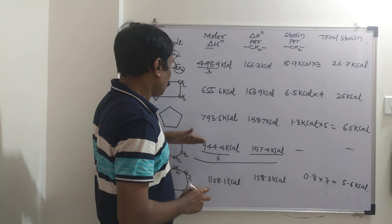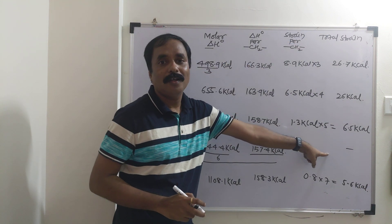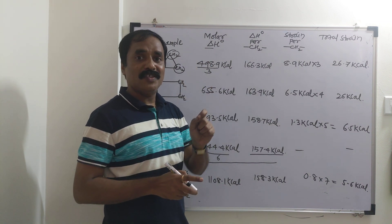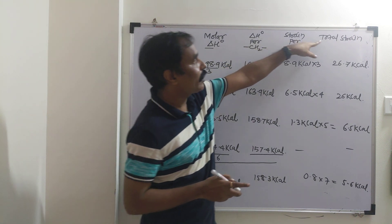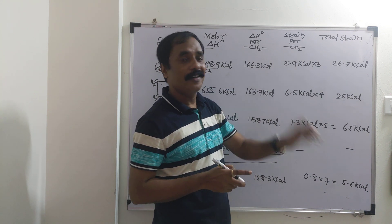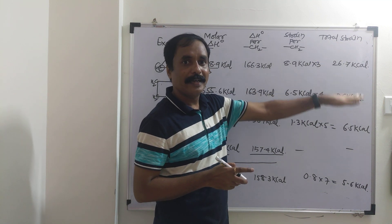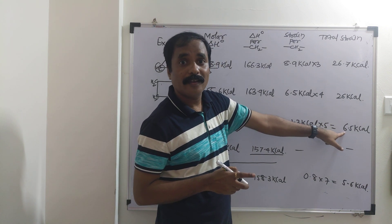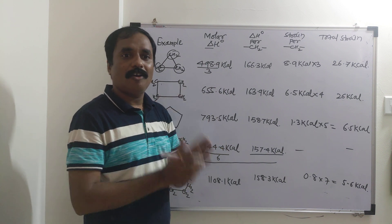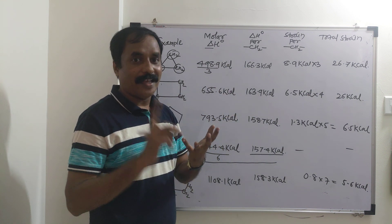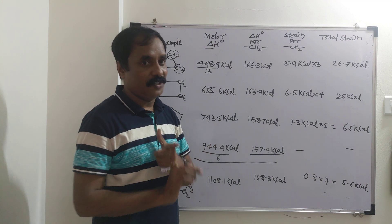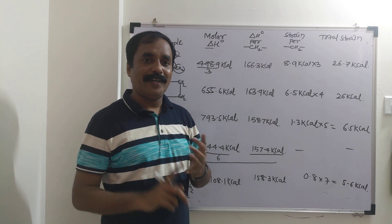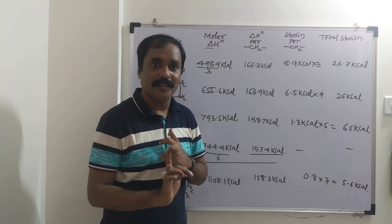For cyclobutane, strain per CH₂ is 163.9 minus 157.4 equals 6.5 kilocalories, giving total strain of 6.5 times 4 equals 26 kilocalories. For cyclopentane, strain per CH₂ is 158.7 minus 157.4 equals 1.3 kilocalories, total strain 1.3 times 5 equals 6.5 kilocalories. Cyclohexane has zero strain as it is the baseline. Cycloheptane has strain per CH₂ of 0.8, total strain 0.8 times 7 equals 5.6 kilocalories. Therefore, the order of stability based on heat of combustion is: cyclohexane, cyclopentane, cyclobutane, and cyclopropane. In the next lecture, we will see the conformation of cyclohexane in detail, including torsional strain, steric strain, and trans-annular strain.